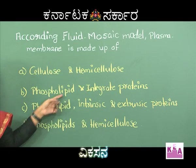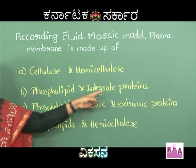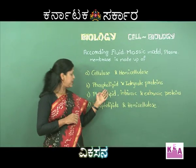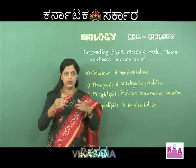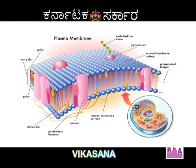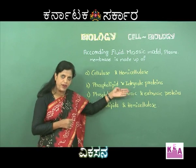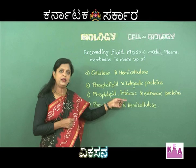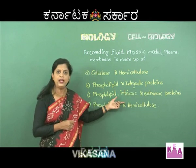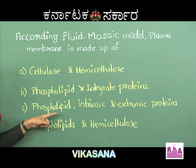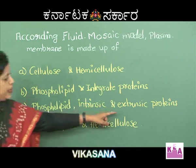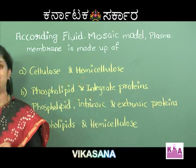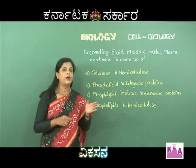Second option: phospholipids and integral proteins. This is right - phospholipids are there, lipids with a phosphate group. Integral proteins are also there. Then look at the third option: phospholipids, intrinsic and extrinsic proteins. This looks more appropriate. Intrinsic proteins are those that are inside the bilipid layer; extrinsic are those coming out of it. So both are present in the plasma membrane.